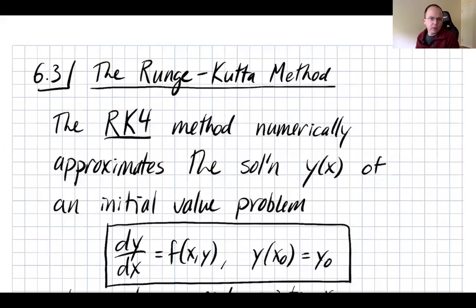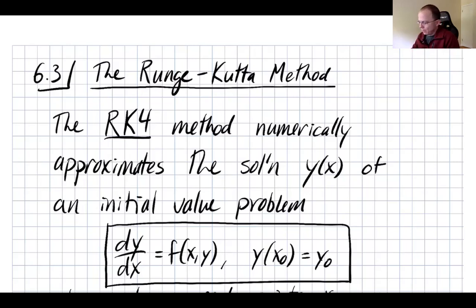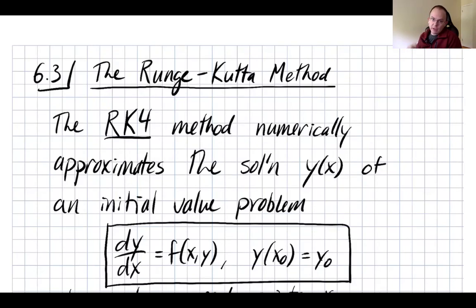This is section 6.3 from MATH336. Today we're going to look at the third and by far the superior numerical method for numerically solving differential equations. This is the so-called Runge-Kutta method, or the RK4 method. It is order four, which means that if you divide your step size by 10, the error will be divided by 10 to the fourth, which is 10,000. So this is by far the most popular of the methods.